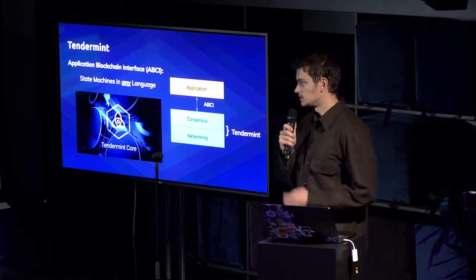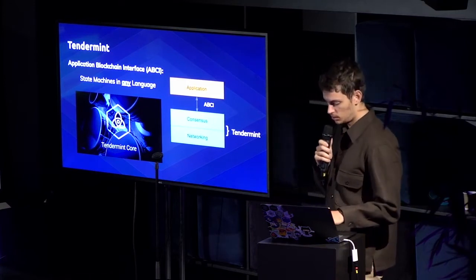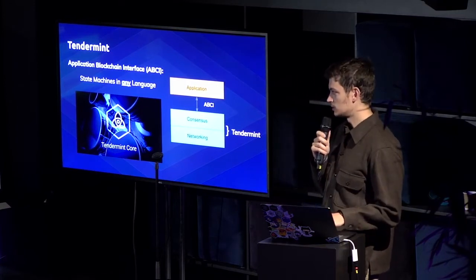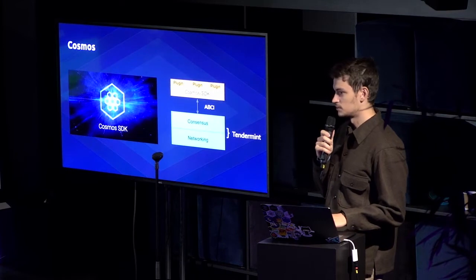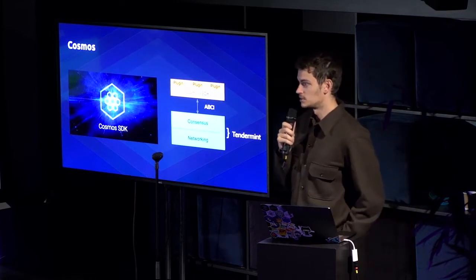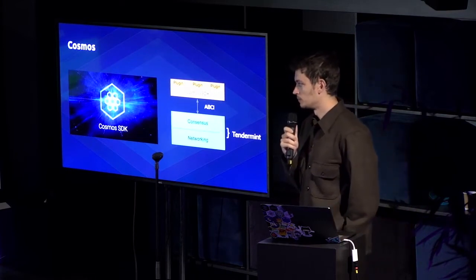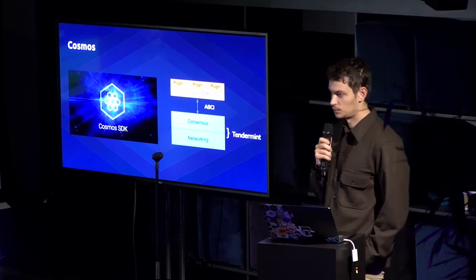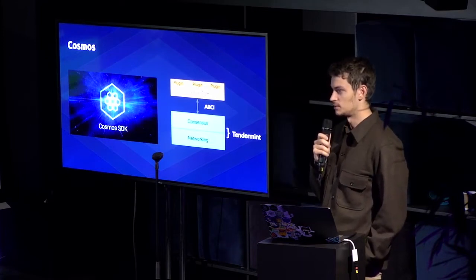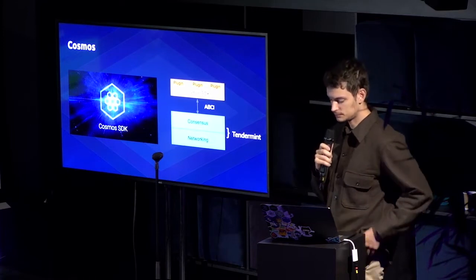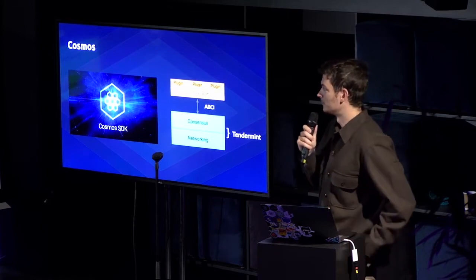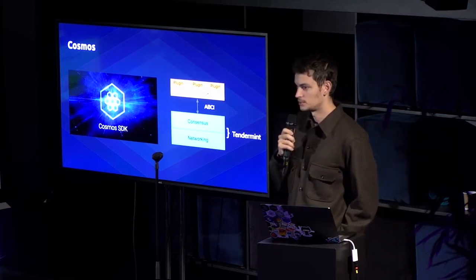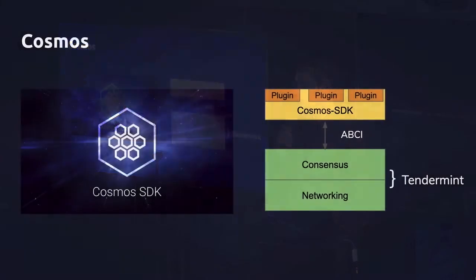One of the most prominent frameworks built on Tendermint using the ABCI is the Cosmos SDK, which is a set of modules built for staking and to use within hubs and zones. There are other applications built on top of it, and one of the biggest ones right now is crypto.com's application, and they actually built the application in Rust.